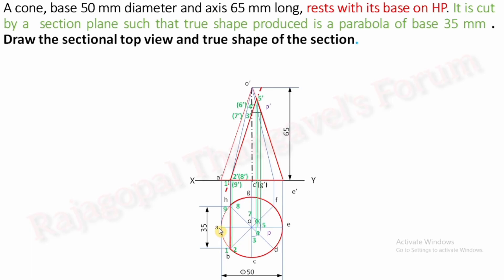Now join all these cutting points of the section plane by a smooth parabola. Check that the curve travels through all points — 1, 2, 3, 4, 5, 6, 7, 8, and 9 — everywhere, and you should obtain a parabola. Do a hatching. This is our section plane. This is our sectional top view.